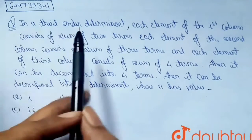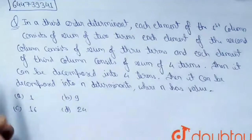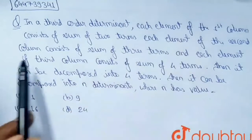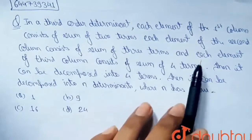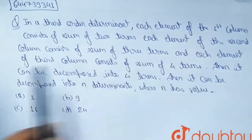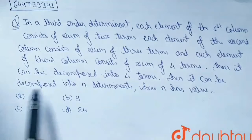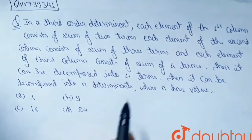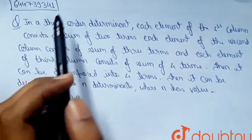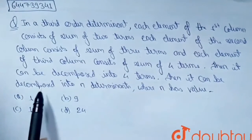In a third order determinant, each element of the first column consists of sum of two terms, each element of the second column consists of sum of three terms, and each element of the third column consists of sum of four terms. Then it can be decomposed into n determinants, where n has a certain value. We have to find this value of n.